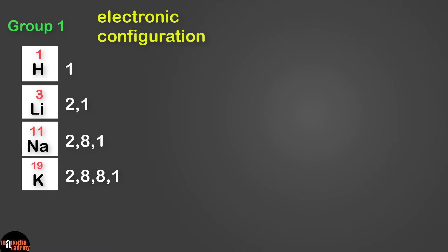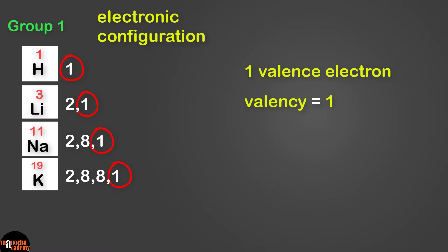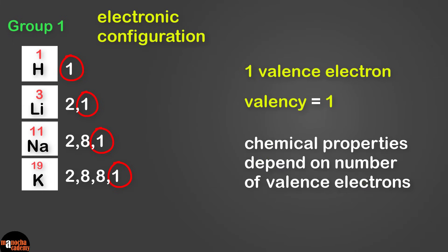So can you see what these elements have in common? That's right - they have just 1 electron in their outermost shell. That's 1 valence electron, so all these elements have the valency 1. And why do they have similar chemical properties? Because chemical properties depend on the number of valence electrons, which is the same for all these elements.